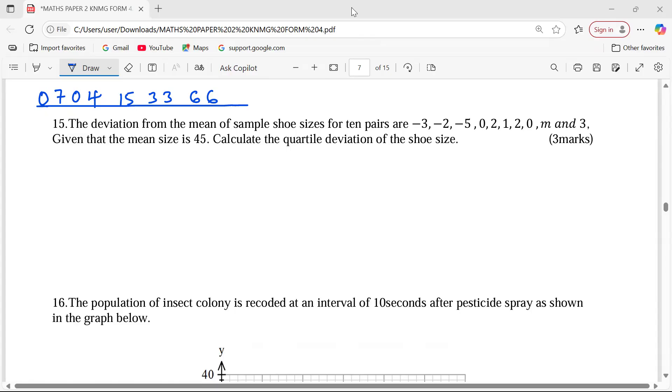The deviation from the mean of sample shoe sizes for 10 pairs are negative 3, negative 2, negative 5, 0, 2, 1, 2, 0, m, and 3. Given that the mean size is 45, calculate the quartile deviation of the shoe sizes.